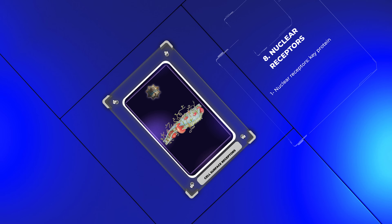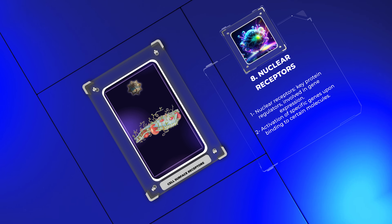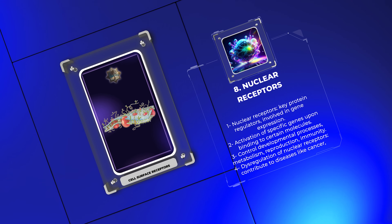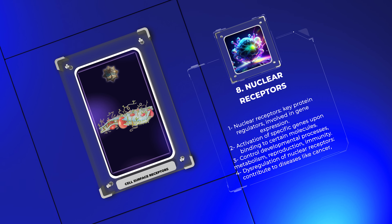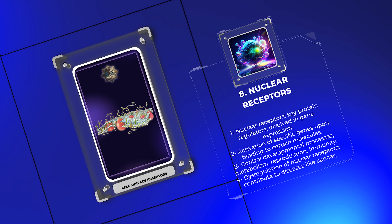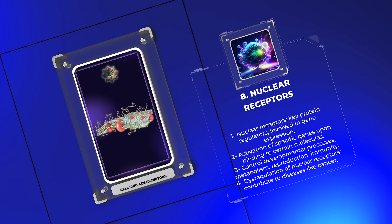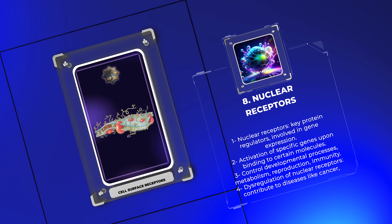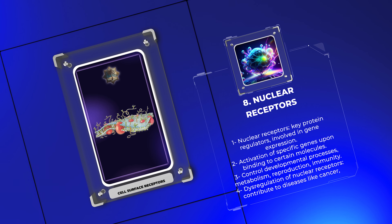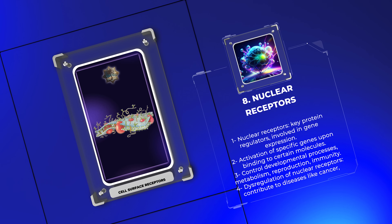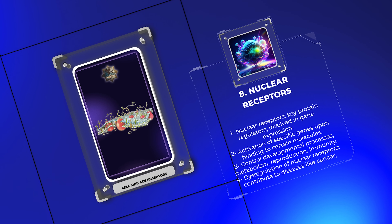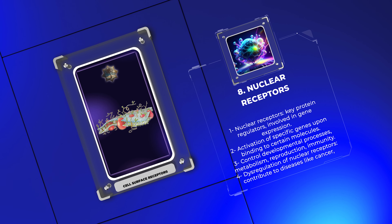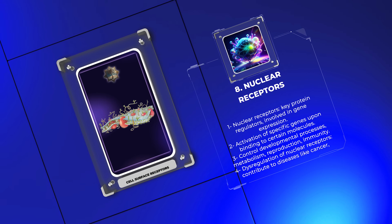Nuclear receptors are key protein regulators involved in gene expression. They activate specific genes upon binding to certain molecules, helping control developmental processes, metabolism, reproduction, and immunity. Dysregulation of these receptors can contribute to diseases like cancer, metabolic disorders, and infertility. They are potential targets for therapies.